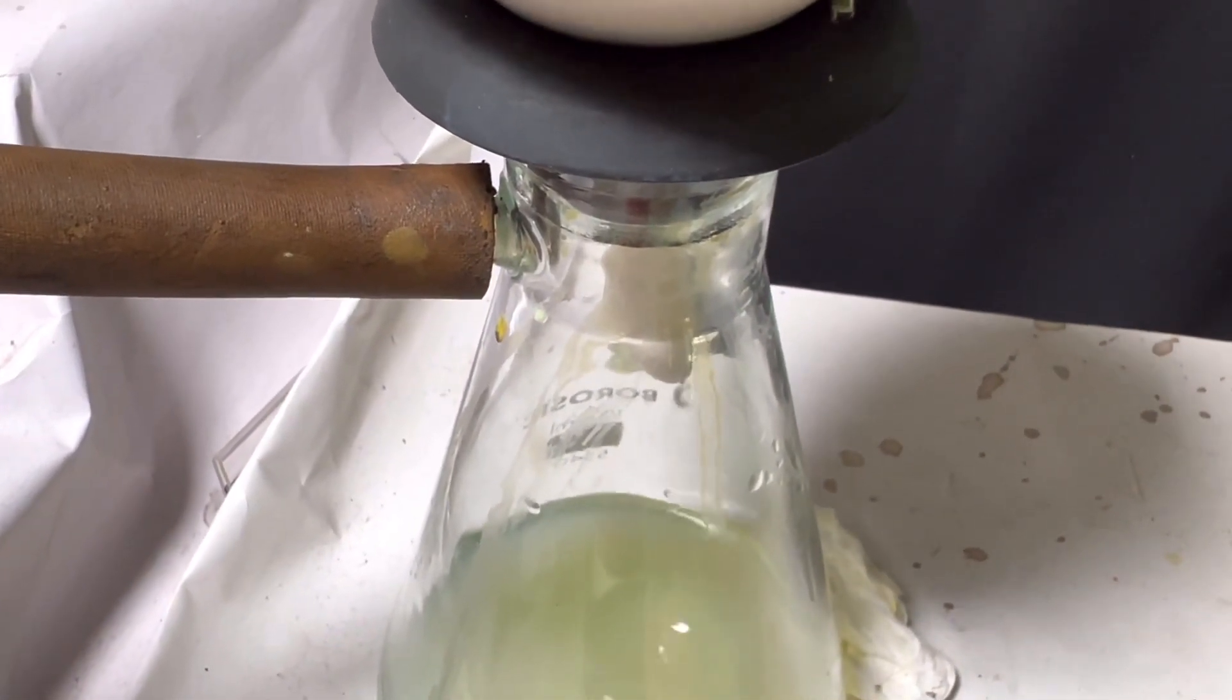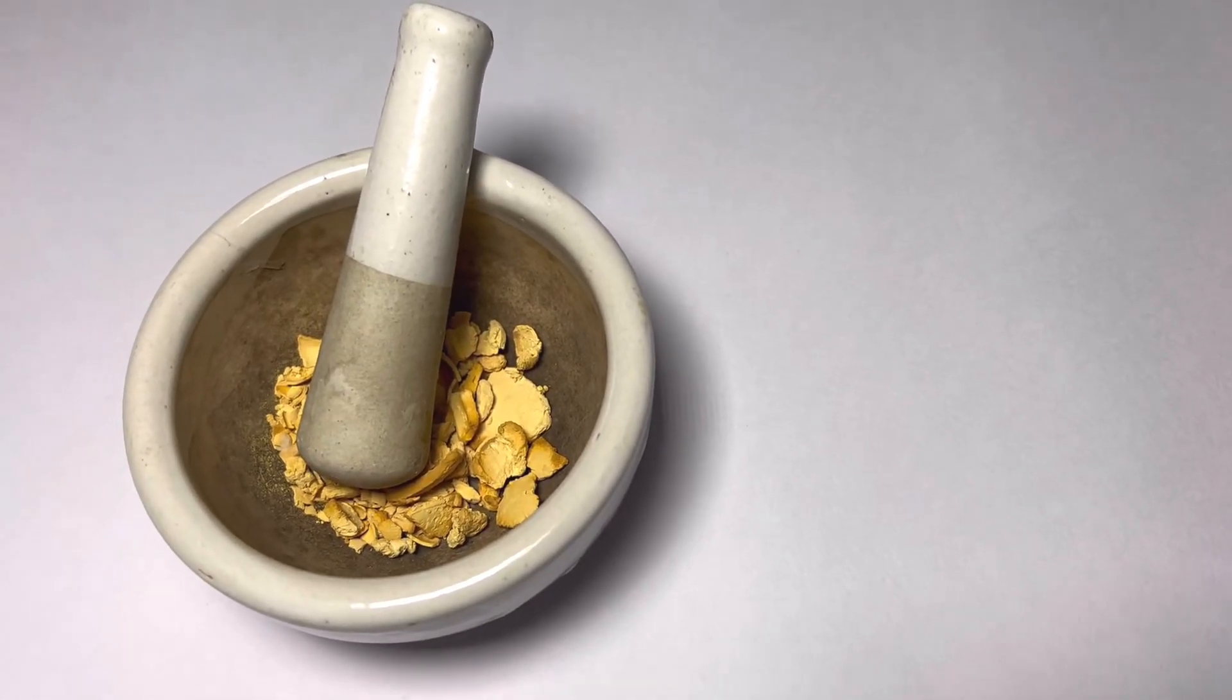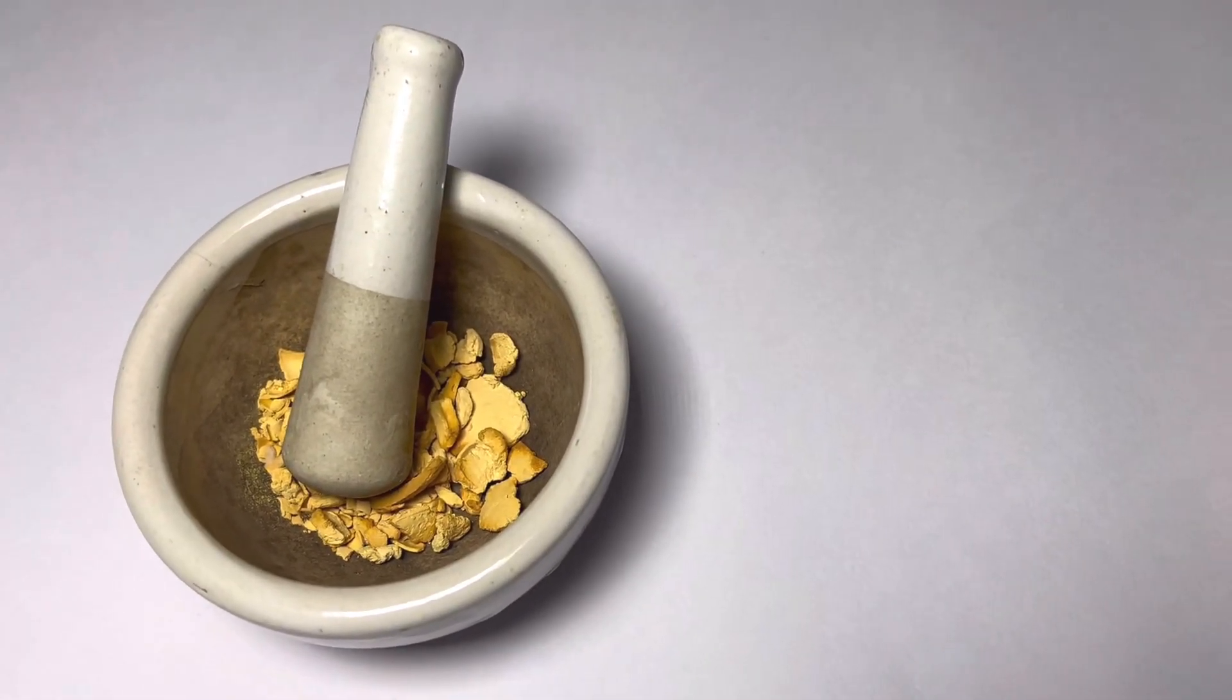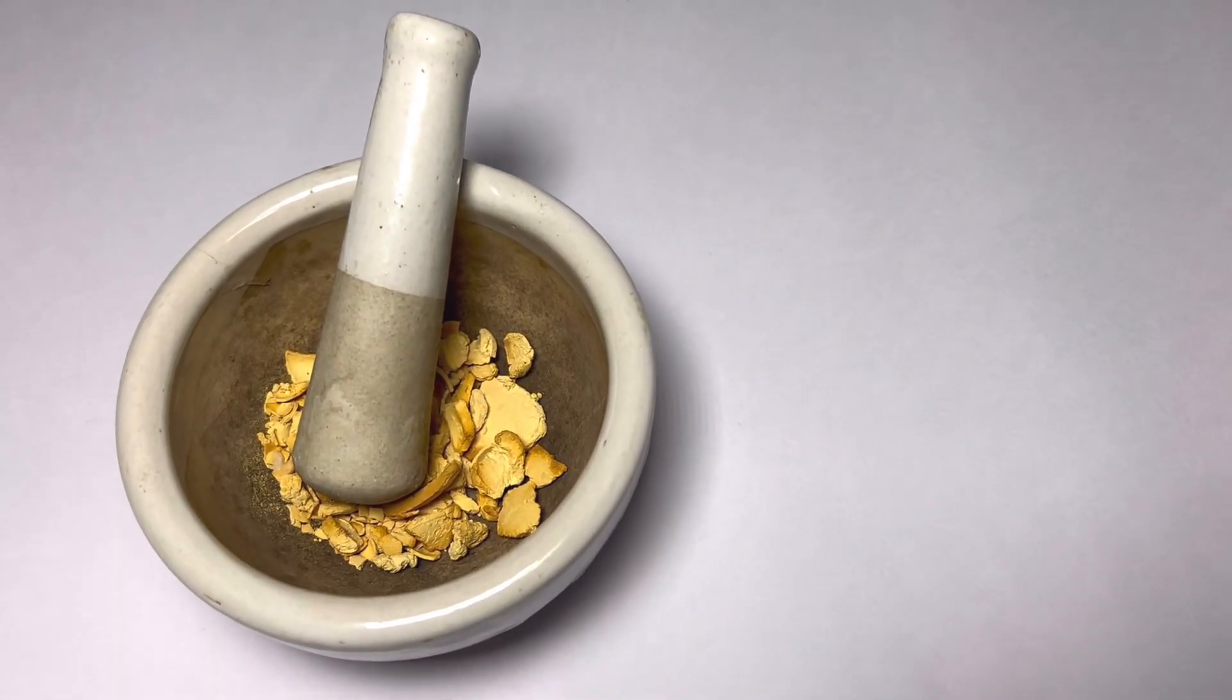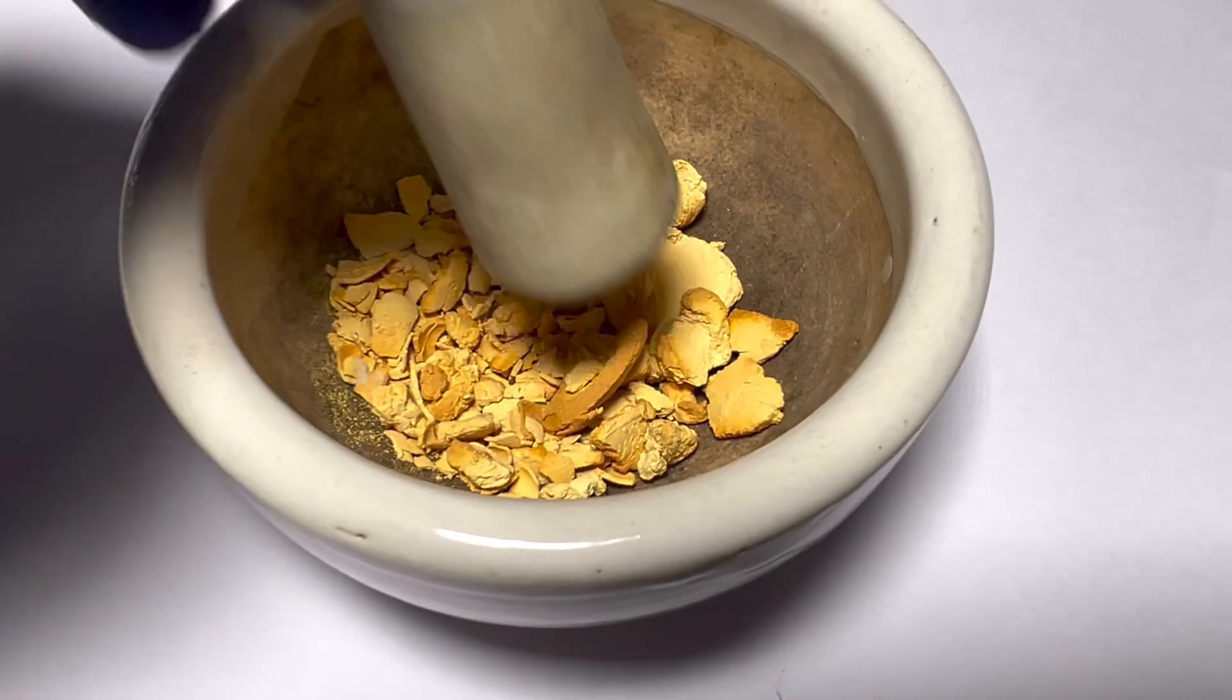Once it is dried in the Buechner funnel, keep the solid in vacuum desiccator for two days alongside anhydrous calcium chloride. Here is the dry product. It was then pulverized to a fine powder.